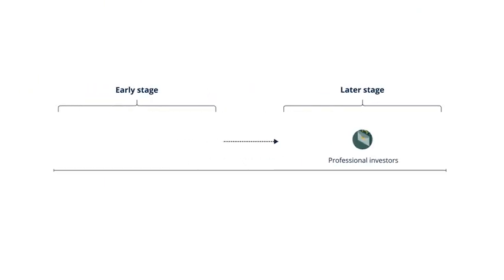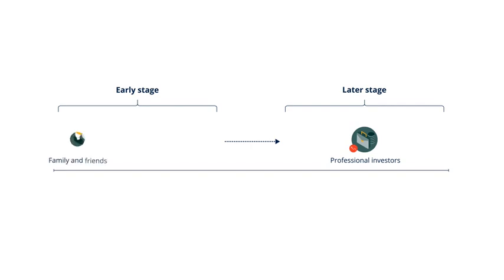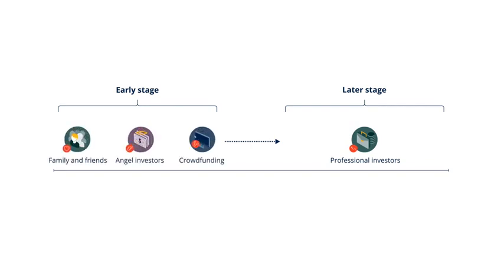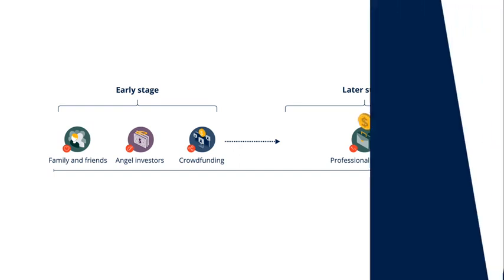One more thing about the professional investors: they tend to come slightly later in the investment cycle. Family and friends, angels and crowdfunding tend to come very early in the investment cycle. Most of the professional investors come slightly later, but they typically also have a lot more money to invest.